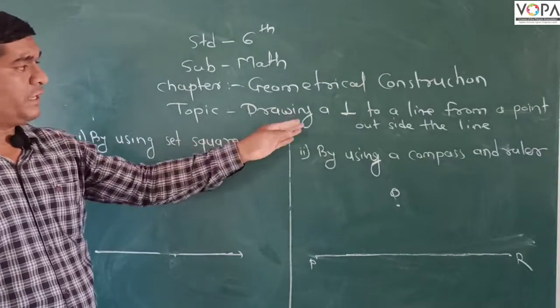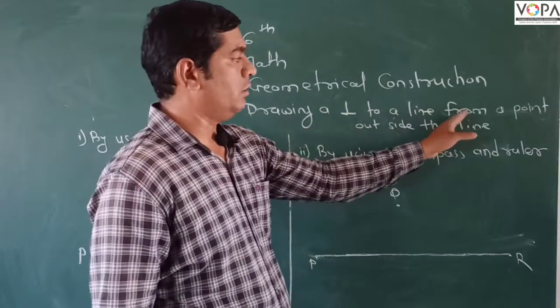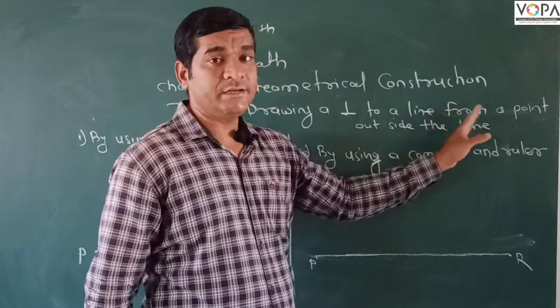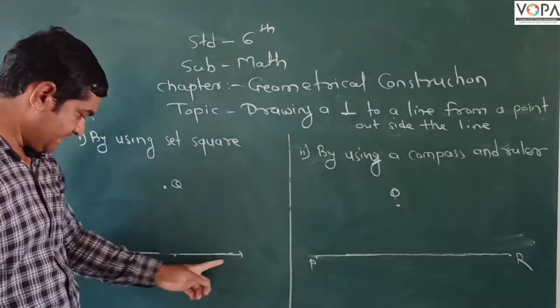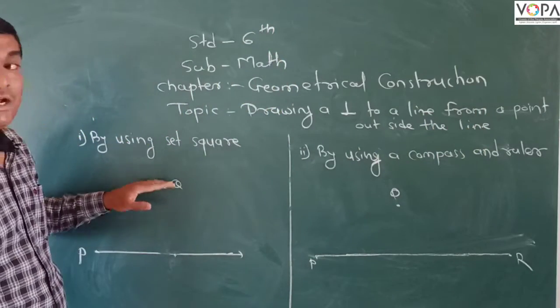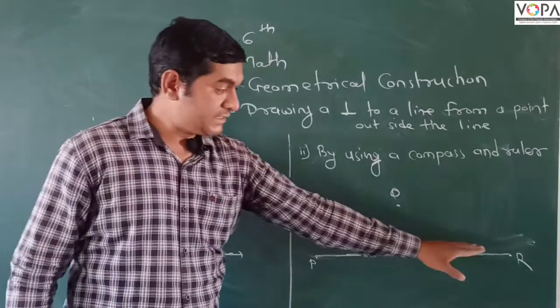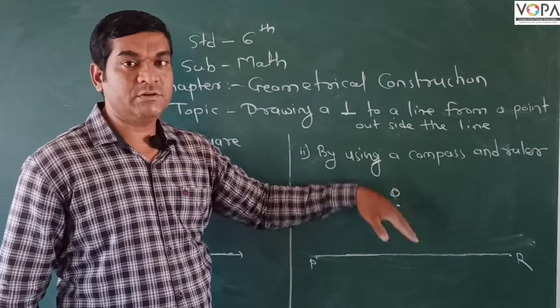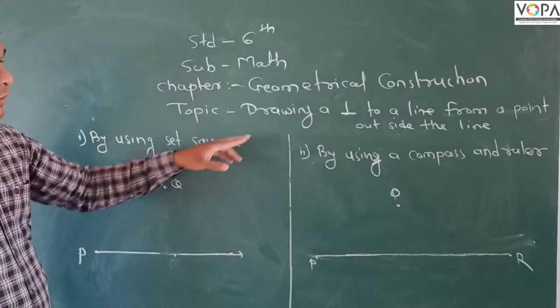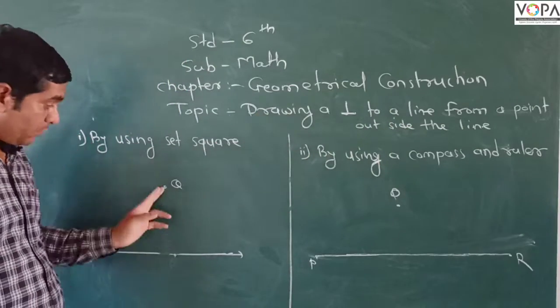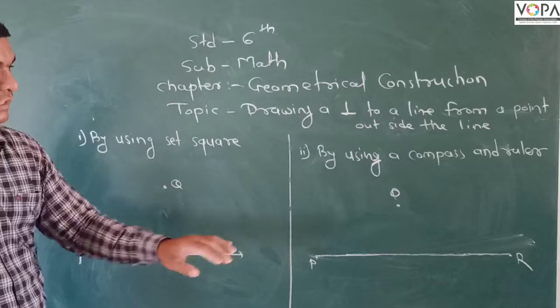The topic is drawing a perpendicular to a line from a point outside the line. Outside the line means, see, this is the line and the point Q is given outside. Line PR is given, and point Q is given outside. We want to draw the perpendicular from point Q to the line.